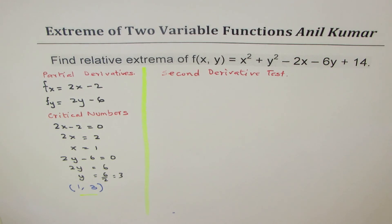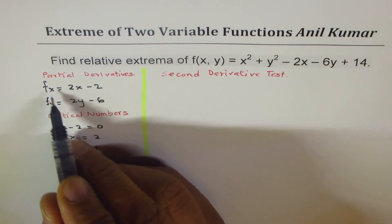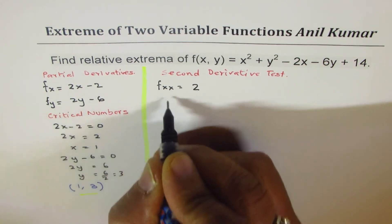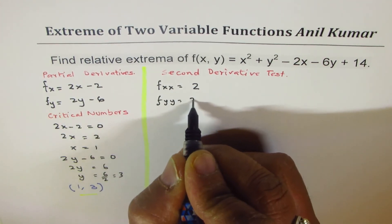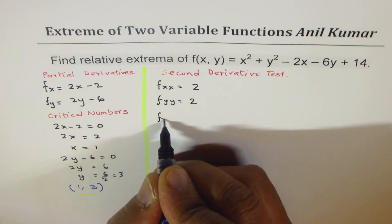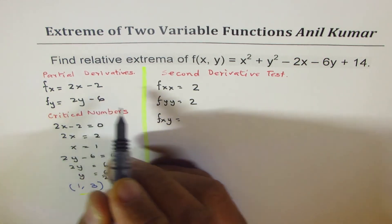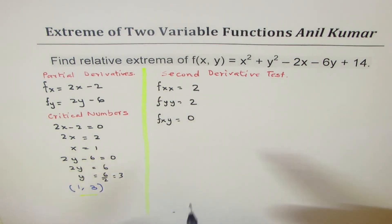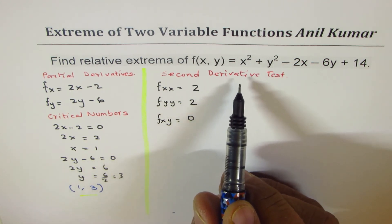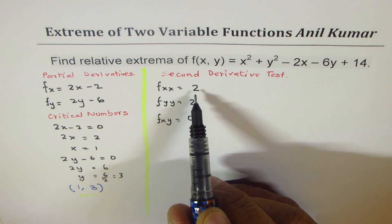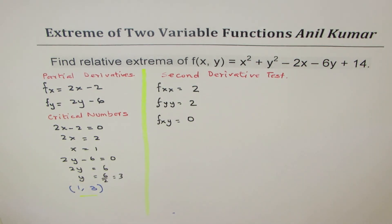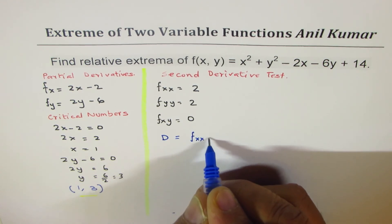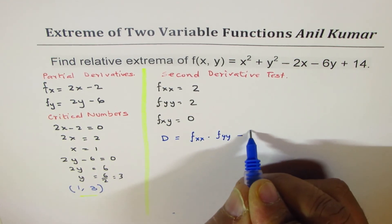In the second derivative test, we find the second-order partial derivatives. fxx = 2, fyy = 2, and fxy = 0. We then compute D = fxx·fyy - (fxy)², which can also be remembered in matrix form.